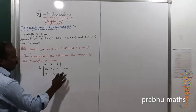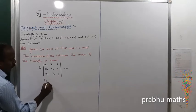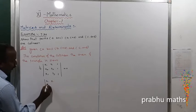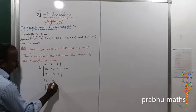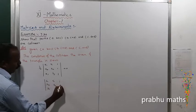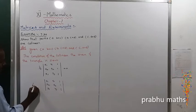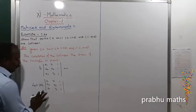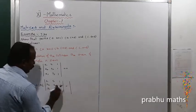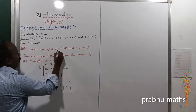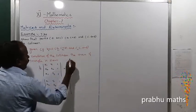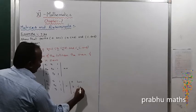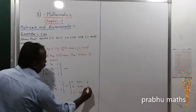Let us call this determinant delta of A. So we replace the values of the given points. The first point is (A, B+C), the second point is (B, C+A), and the third point is (C, A+B). So x1=A, y1=B+C; x2=B, y2=C+A; x3=C, y3=A+B. The remaining entries are 1, 1, 1.